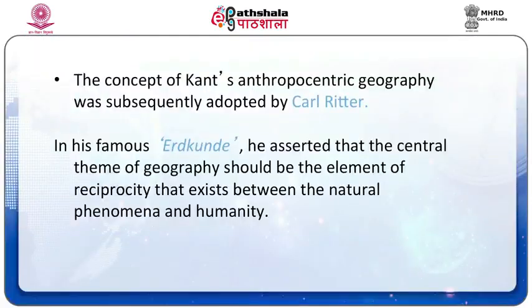Kant was also of the opinion that empirical knowledge could be obtained in two ways: either through pure reason or through the senses. Senses could be divided into inner senses and outer senses. The world as perceived by the inner senses is the soul or mensch, meaning man, while as perceived by the outer senses is nature. Kant's concept of anthropocentric geography was subsequently adopted by Karl Ritter in his famous book Erdkunde, in which he asserted that the central theme of geography should be the element of reciprocity that exists between natural phenomena and humanity.